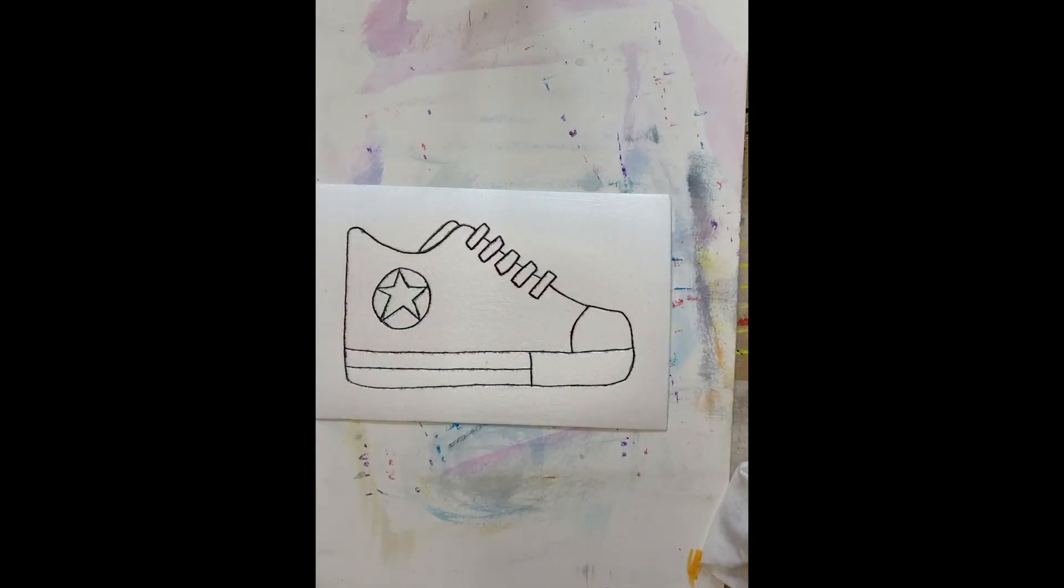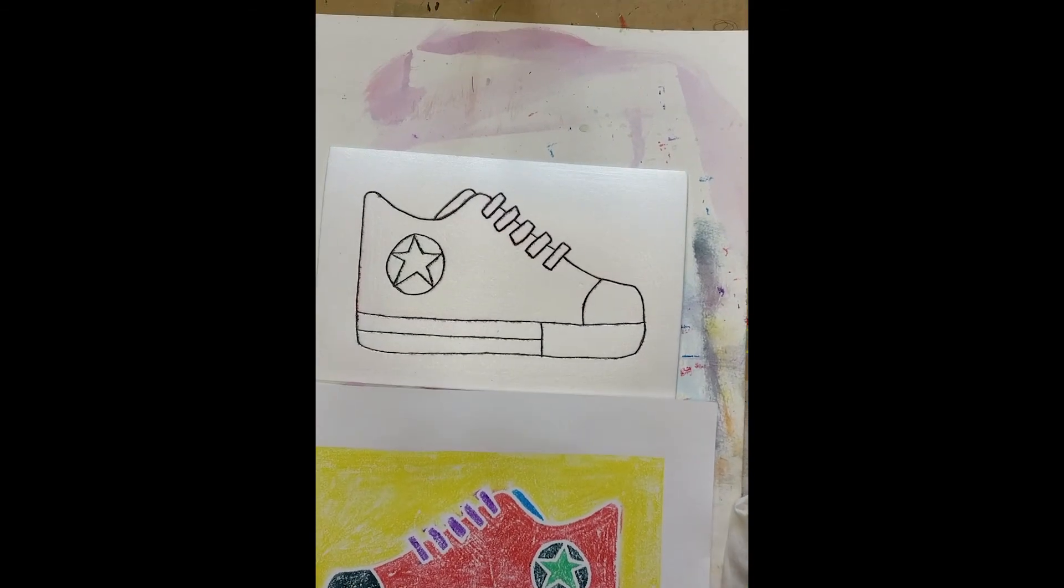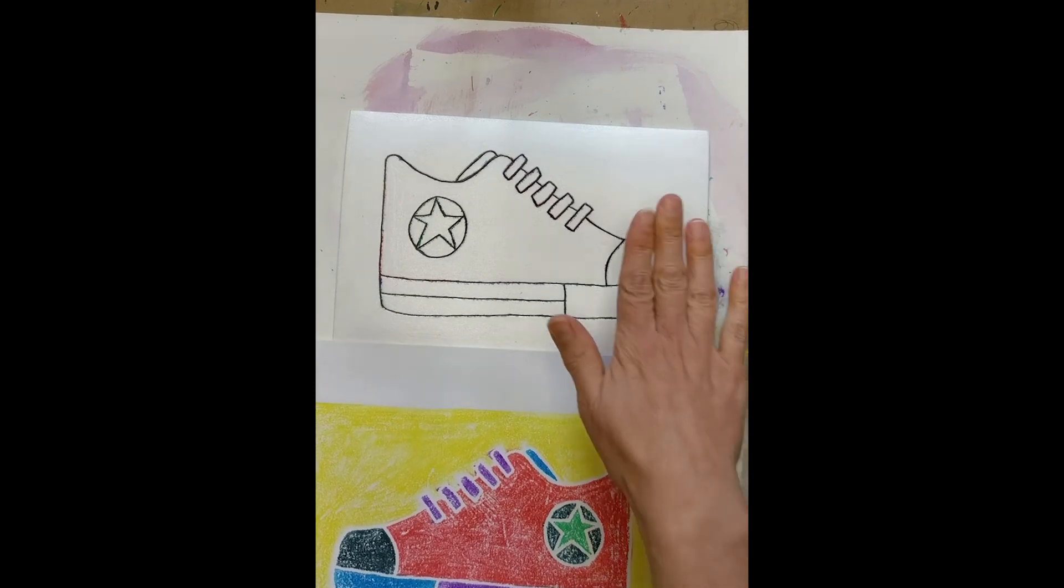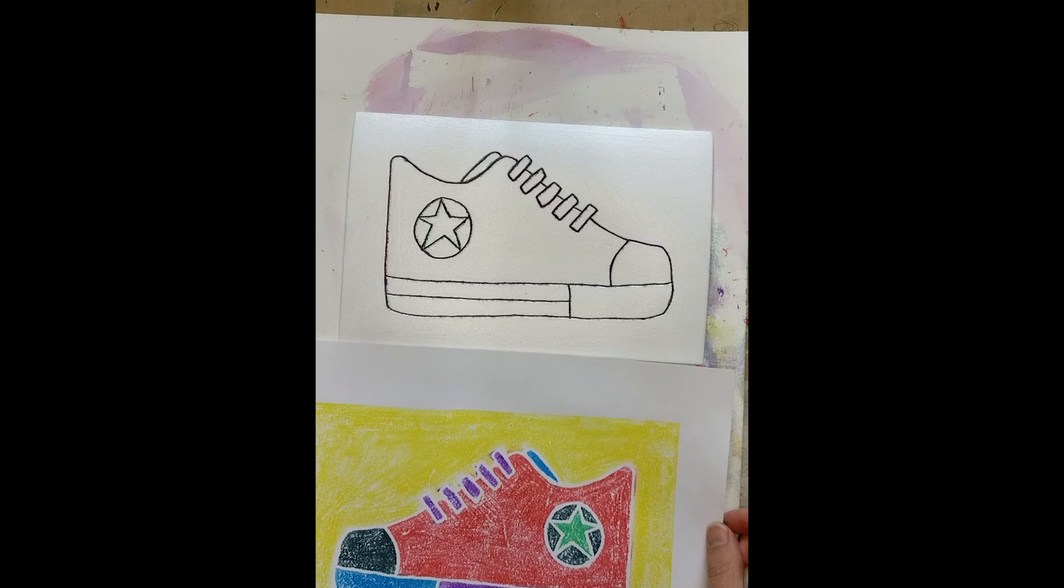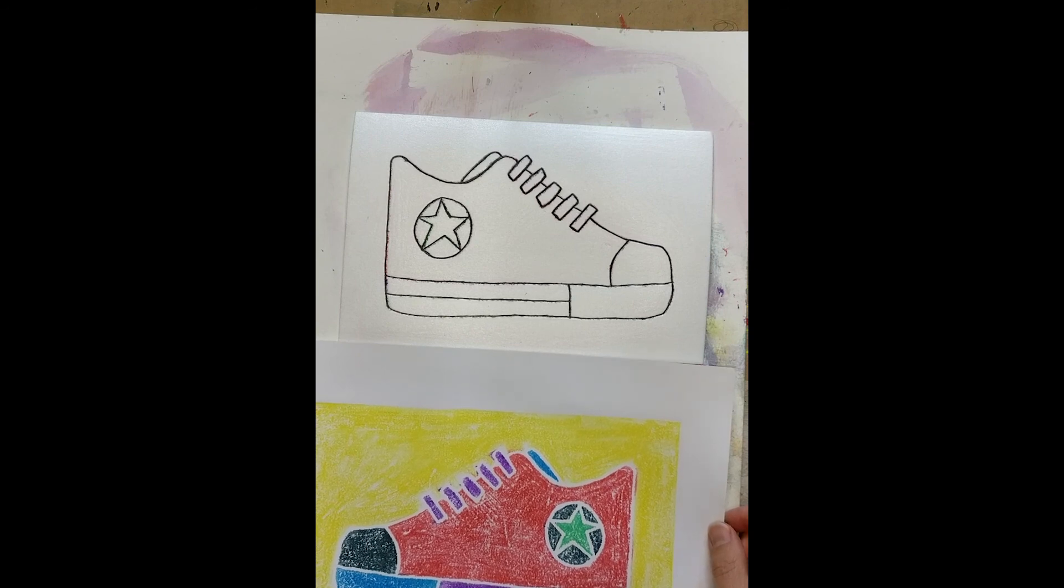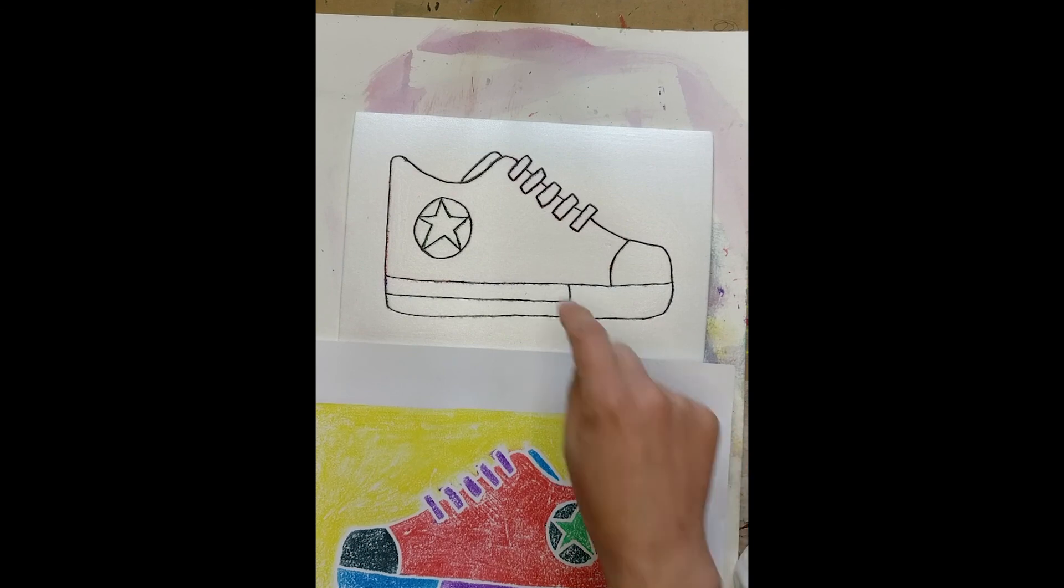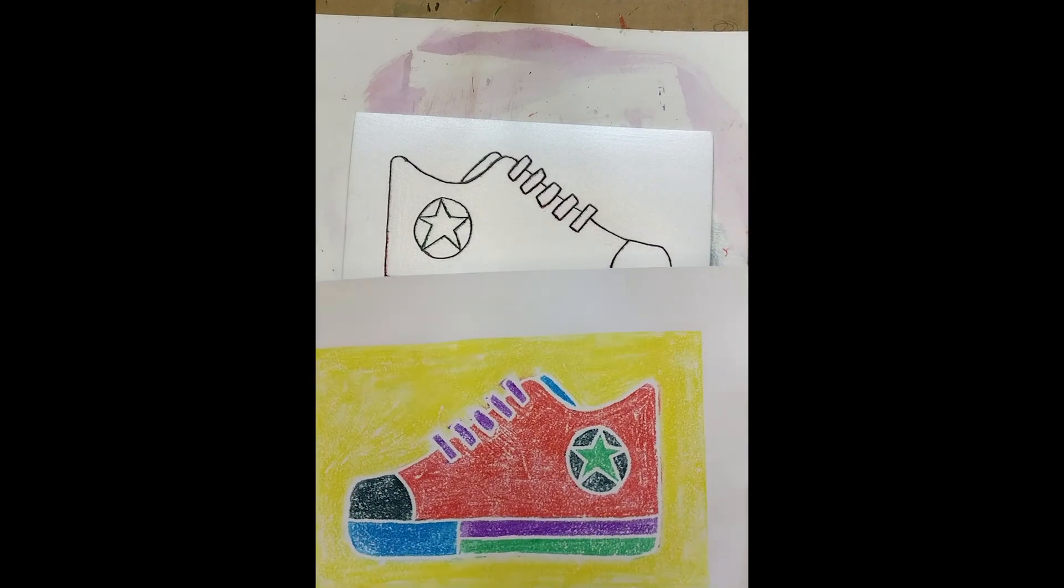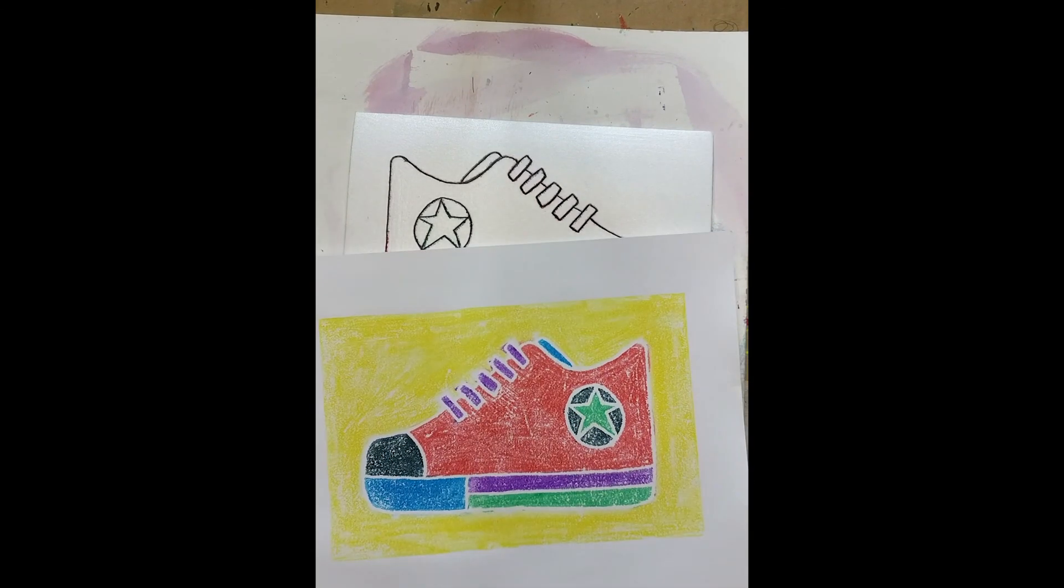And I do want to just point out again, see how it is the reverse of my plate. My final image is that mirror image of the plate. That's how it works when you are printing something like this. So hopefully if you put any words down, you remember to reverse them when you were writing them on your plate. I hope you had fun learning a little bit about pop art and making your own pop art printed sneaker. Thank you.